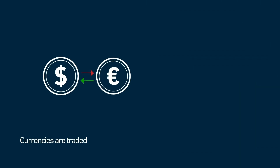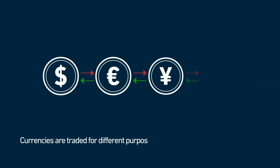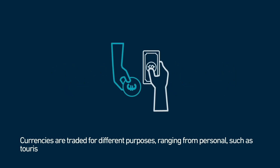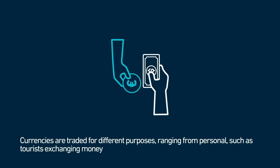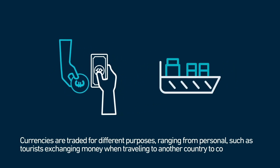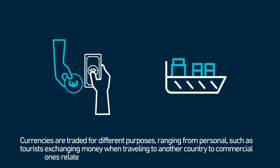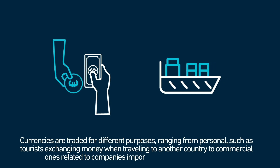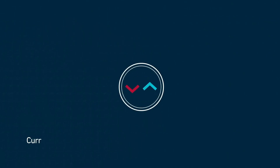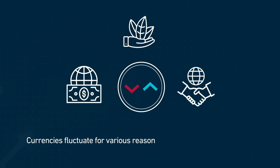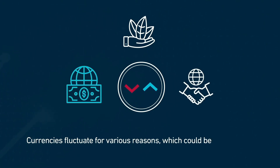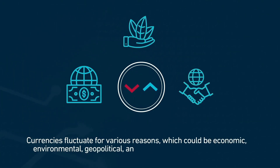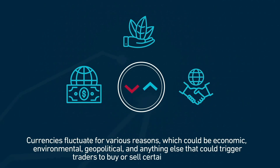Currencies are traded for different purposes, ranging from personal — such as tourists exchanging money when traveling to another country — to commercial ones related to companies importing and exporting products. Currencies fluctuate for various reasons, which could be economic, environmental, geopolitical, or anything else that could trigger traders to buy or sell certain currencies.